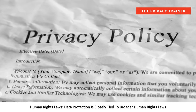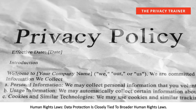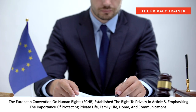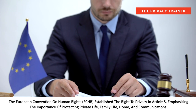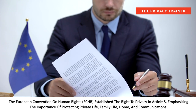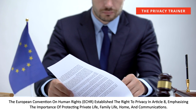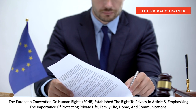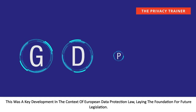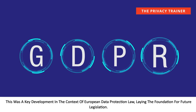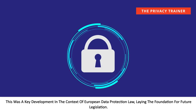Human Rights Laws: data protection is closely tied to broader human rights laws. The European Convention on Human Rights established the right to privacy in Article 8, emphasising the importance of protecting private life, family life, home and communications. This was a key development in the context of European data protection law, laying the foundation for future legislation.